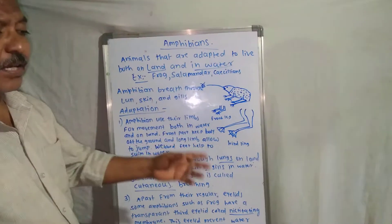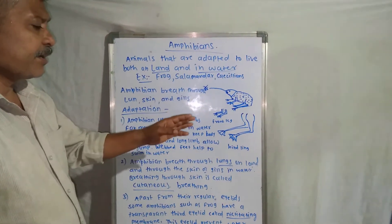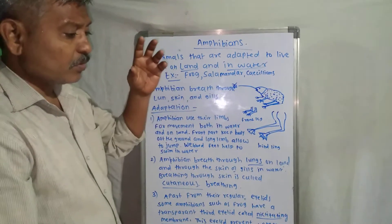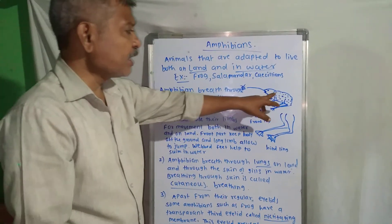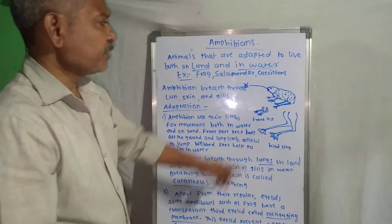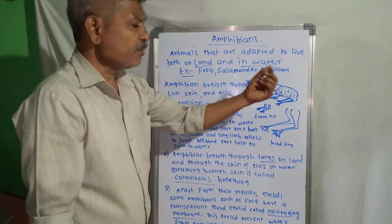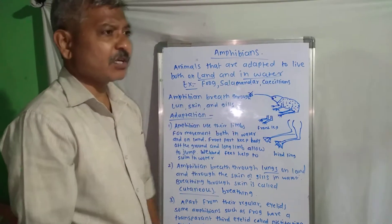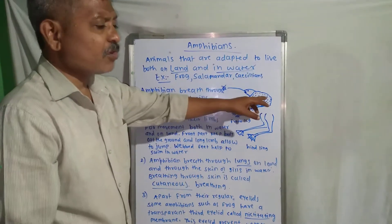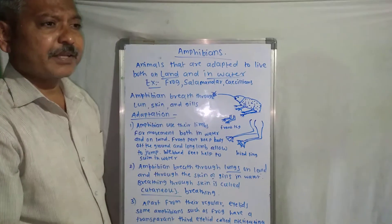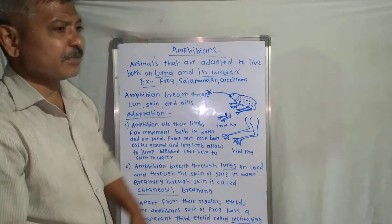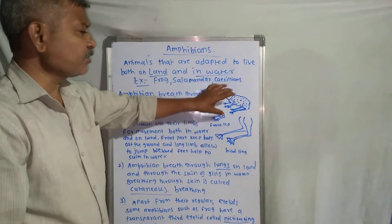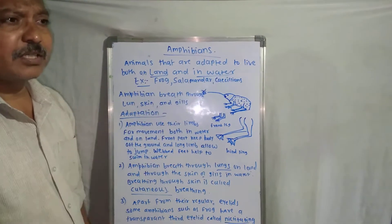The frog has nostrils on its head, and from those nostrils it breathes with the help of lungs, like other terrestrial animals. When it swims inside the water or lives inside the water, it is able to breathe through its skin. The skin has small pores, and from those pores the frog absorbs water and utilizes the dissolved oxygen for breathing. So on land it breathes through lungs, and inside water it breathes through the skin.